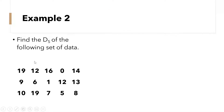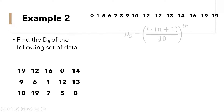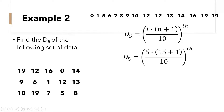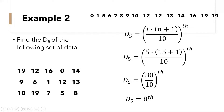Let's have example number 2: find the decile 5 of the following set of data. Again, arrange the data in ascending order. We are looking for decile 5, so our i is 5. So d sub 5 is equal to 5 times 15 (the number of samples) plus 1, over 10. So 15 plus 1 is 16, times 5 is 80, divided by 10 is 8. So decile 5 is the 8th data.